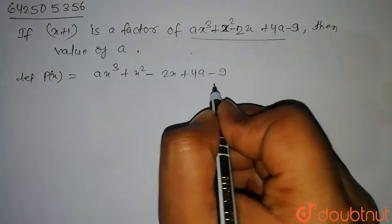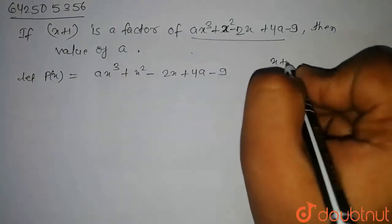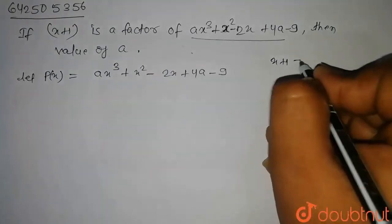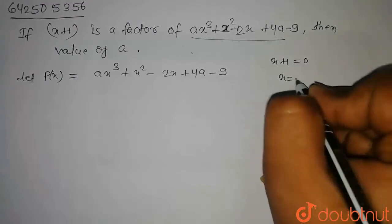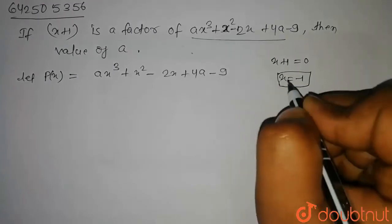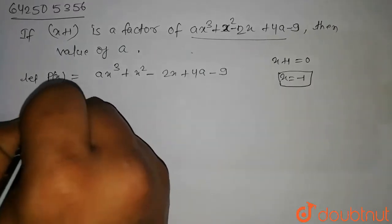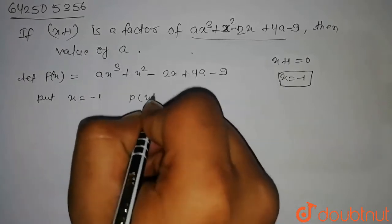Then we have to find the value of a, and it is given that x plus 1 is a factor of this polynomial. So x plus 1 equal to 0, that is x equal to minus 1, will be the zero of this polynomial. So on putting x equal to minus 1, P(x) will be equal to 0.